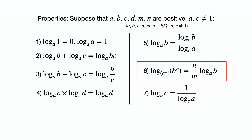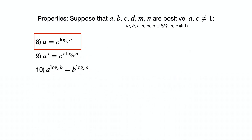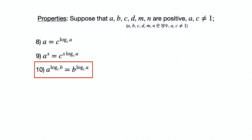Property 6: if there are exponents on both the base and the argument, these exponents can be taken out of the log — but make sure n is multiplied and m is divided. Property 7: log base a of c equals 1 over log base c of a. Property 8: a equals c to the power of log base c of a. Property 9: a to the x power equals c to the x times log base c of a power. Property 10: a to the power of log base c of b equals b to the power of log base c of a.